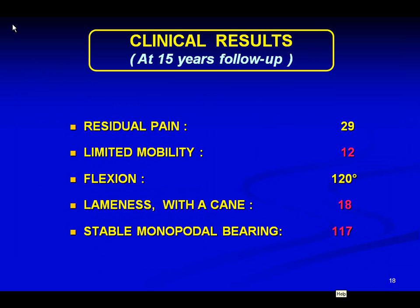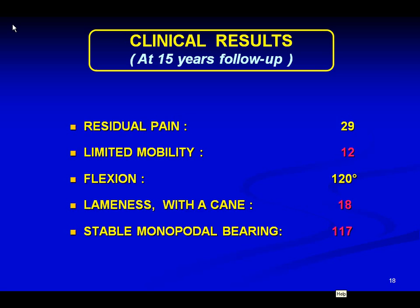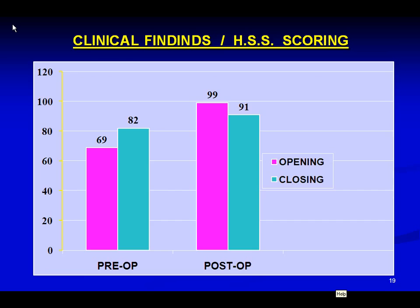Regarding the clinical results, we mainly note that pain is still present in more than 12% of patients. Our clinical findings are based on the HSS scoring. Note there is an error in the post-op data — the 99 should be green and the 81 should be in pink. For radiological findings, bone healing delay after opening is 70 days and after closing it is 55 days, which is classical.